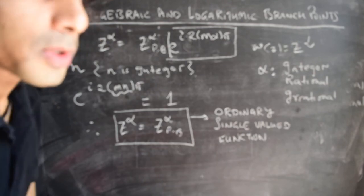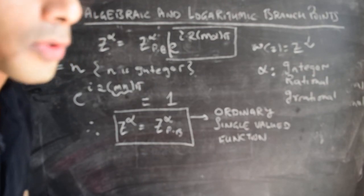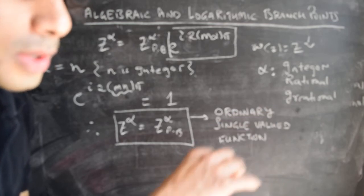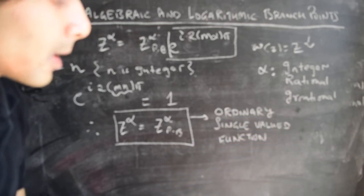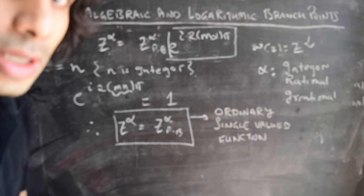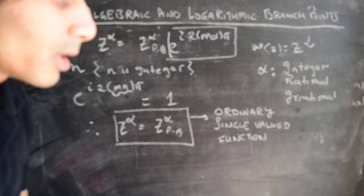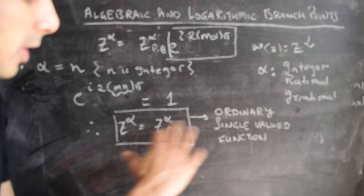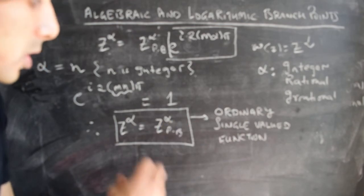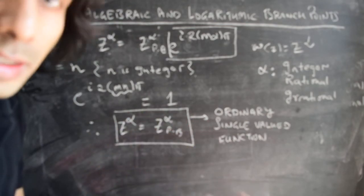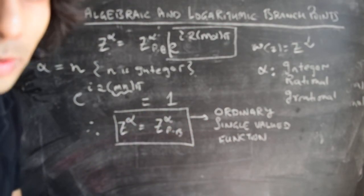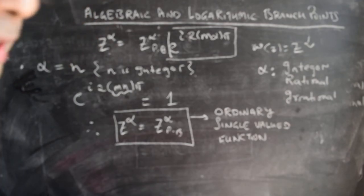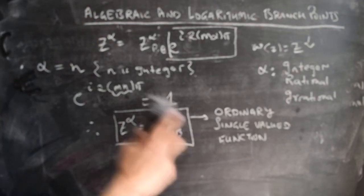This is consistent with how we've talked about functions of the form z to the power of n — in discussions of analyticity and geometry, we never had to talk about multiple values of that function. That's because a function of the form z to the power of n, where n is an integer, is inherently single-valued; it doesn't have multiple values.